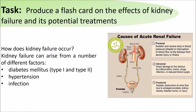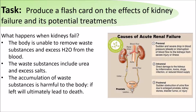How does kidney failure occur? It can be from a number of factors; the main ones are diabetes, hypertension, or infection. When the kidneys fail, the body is unable to remove waste substances and excess water from the blood. The waste substances include urea and excess salts, which accumulate in the body until they reach harmful levels.